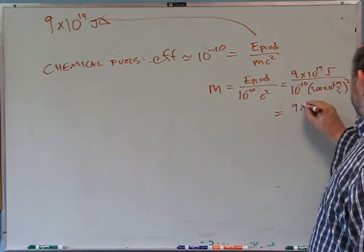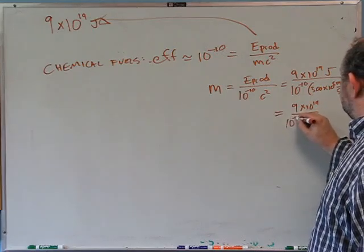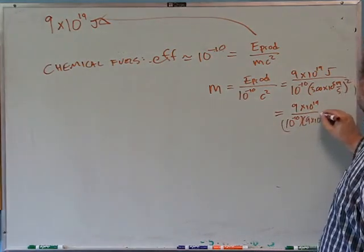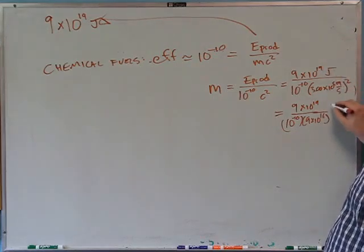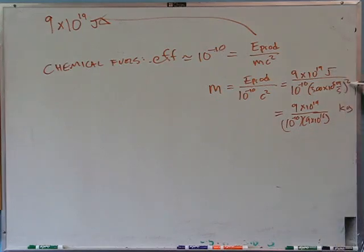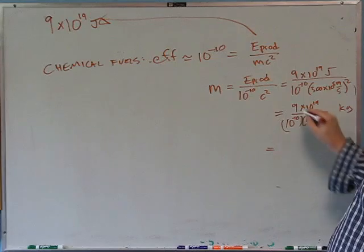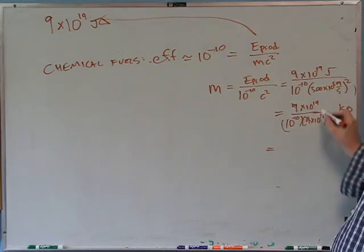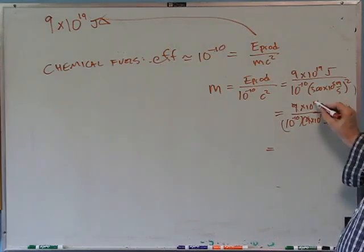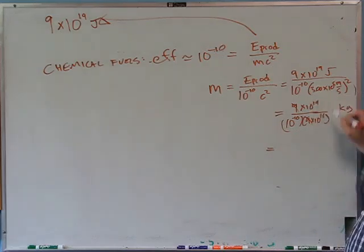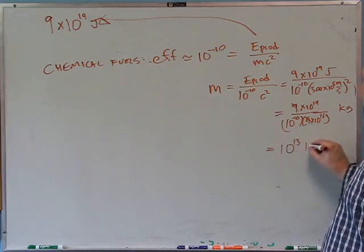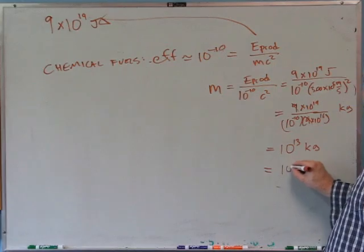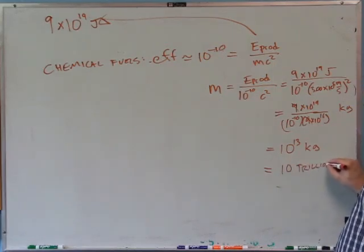So we have 9×10¹⁹ ÷ (10⁻¹⁰ × 9×10¹⁶) = 10³ kilograms from the exponents, giving about 10¹³ kilograms. That's 10 trillion kilograms of coal, gasoline, and fuel burned every year to produce all the energy the US uses.